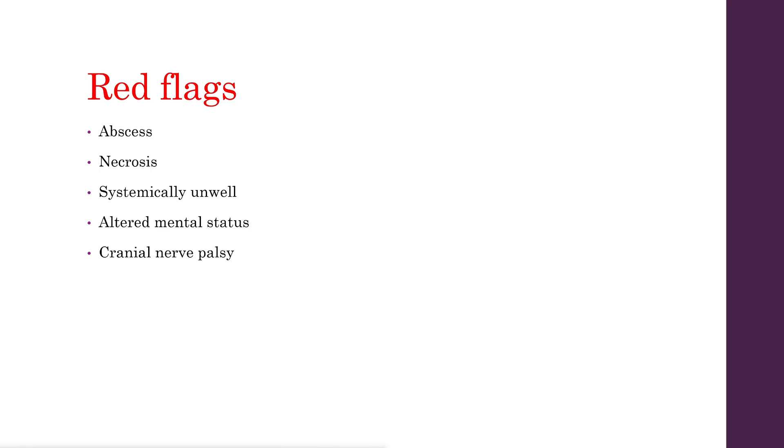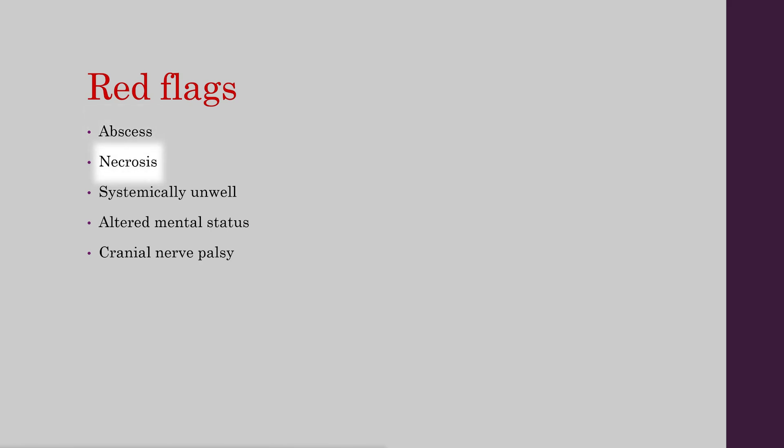The red flags of perichondritis and pinna cellulitis include: the presence of an abscess, which needs to be drained and discussed with the registrar; any areas of necrosis, which may require debridement in theatre or under local anaesthesia; infection severe enough to make the patient systemically unwell; and signs of altered mental status such as confusion or delirium, indicating severe infection.